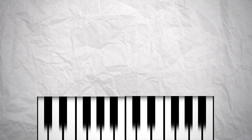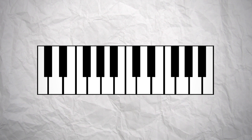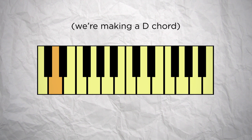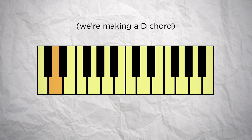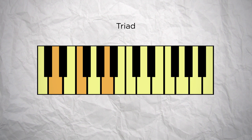As you probably already know, to build a chord, you basically take the notes of the scale you want to use, start with the note you want to build a chord from — that's the note that will give the chord its name — and then follow the notes of the scale keeping one note every two. If you keep 3 notes, you have a triad which is made of a tonic, a 3rd and a 5th.